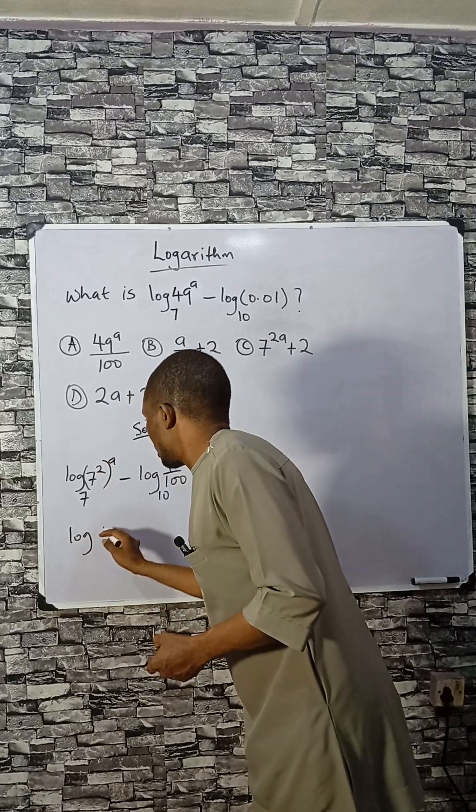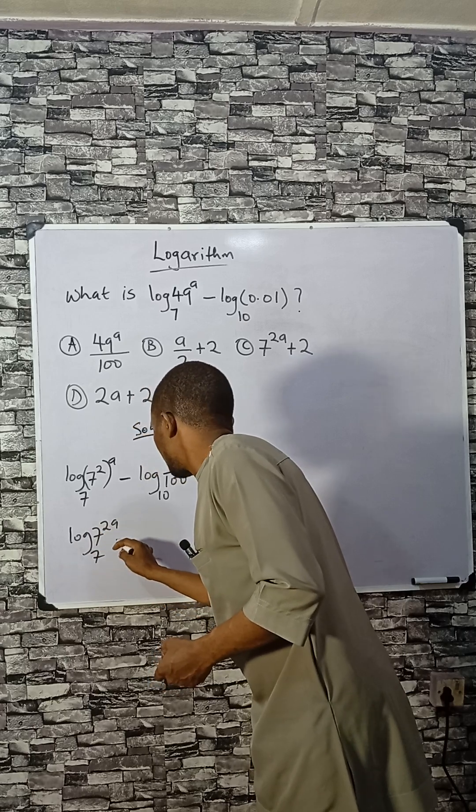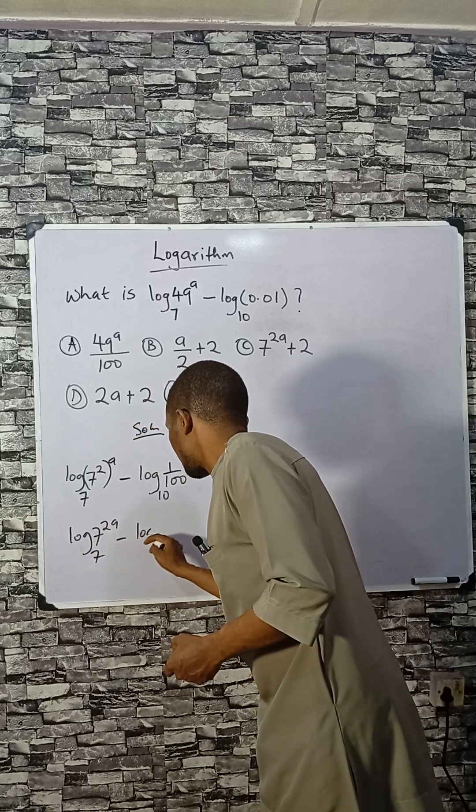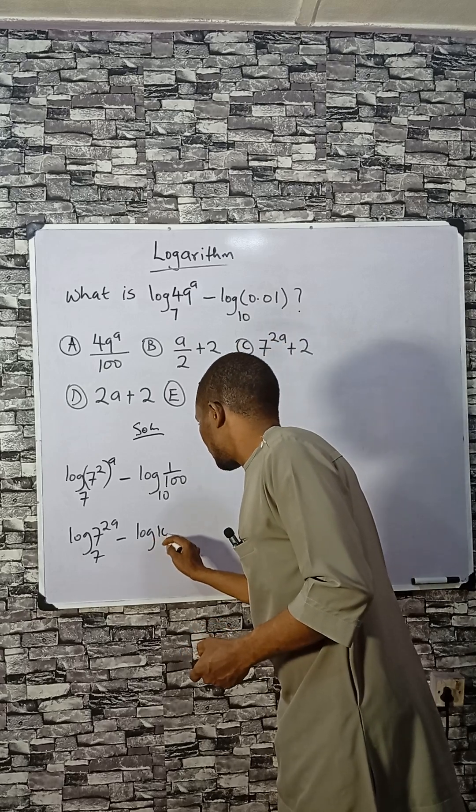2 times a, that is 7 raised to power 2a base 7, minus we can write 100 as 10 raised to power minus 2, is 10.